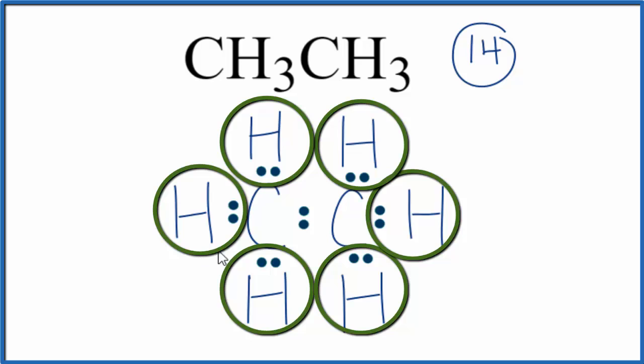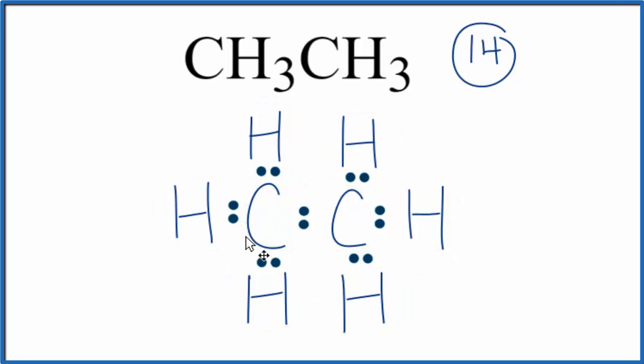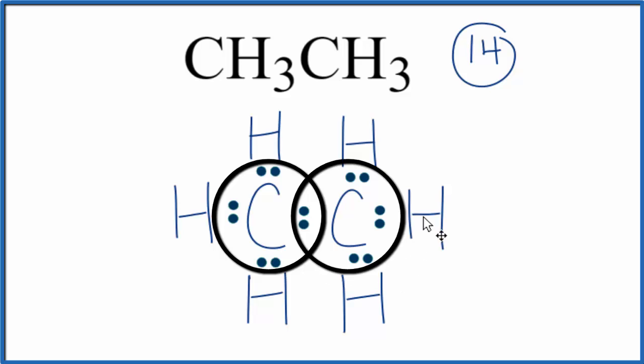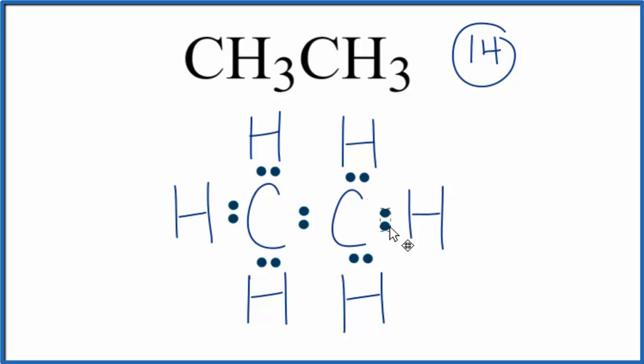So at this point, you can see each hydrogen has 2 valence electrons here by sharing with the carbon. Hydrogen only needs 2 to have a full outer shell. Each carbon atom has 8 valence electrons. That's an octet. So it has its octet satisfied as well. So this is the Lewis structure for CH3CH3.